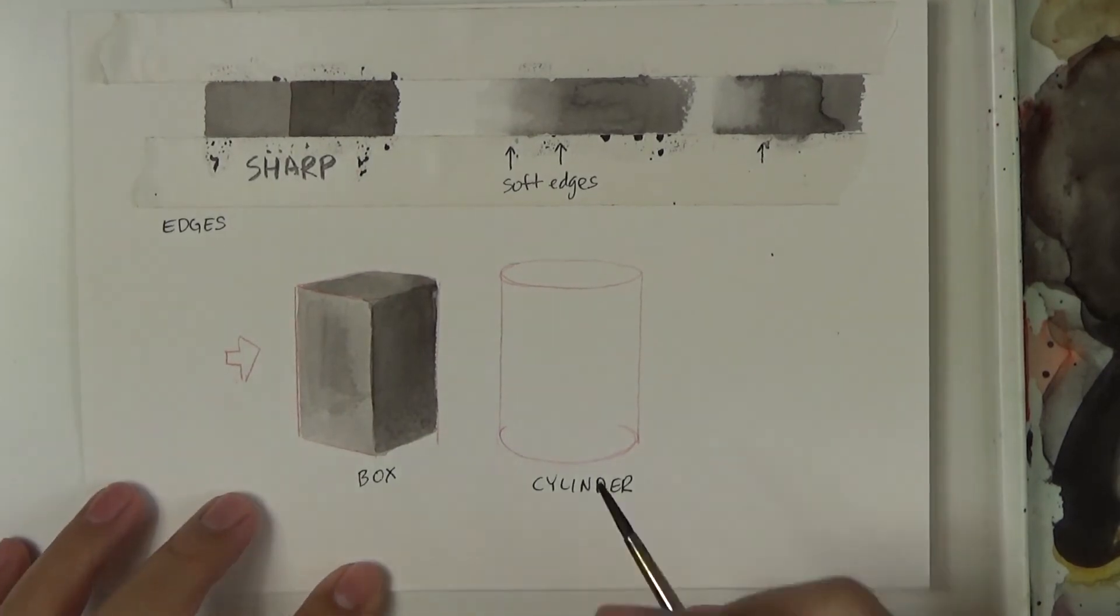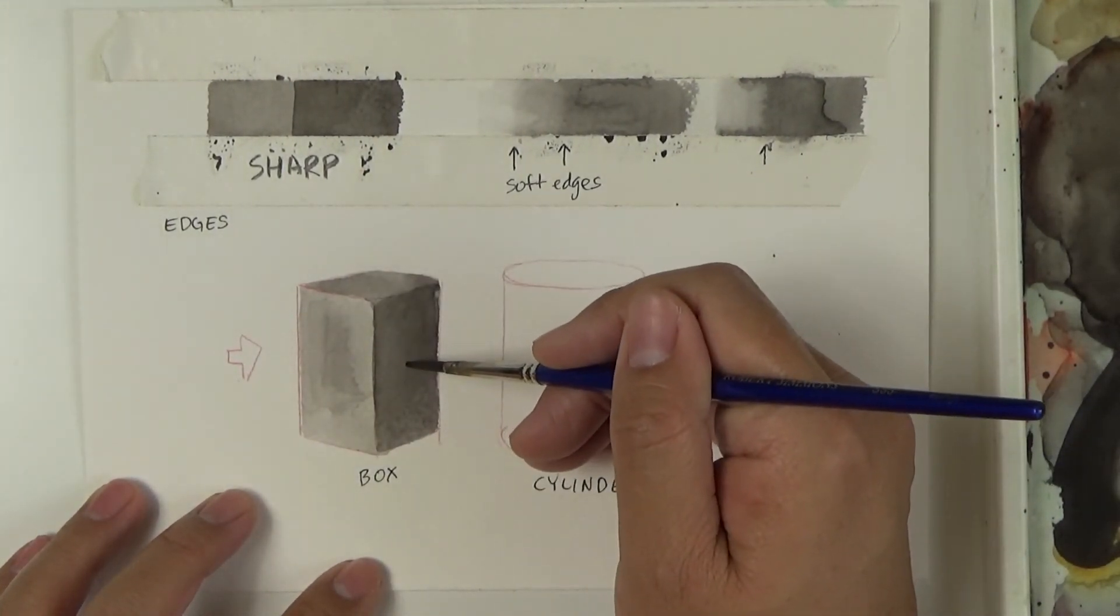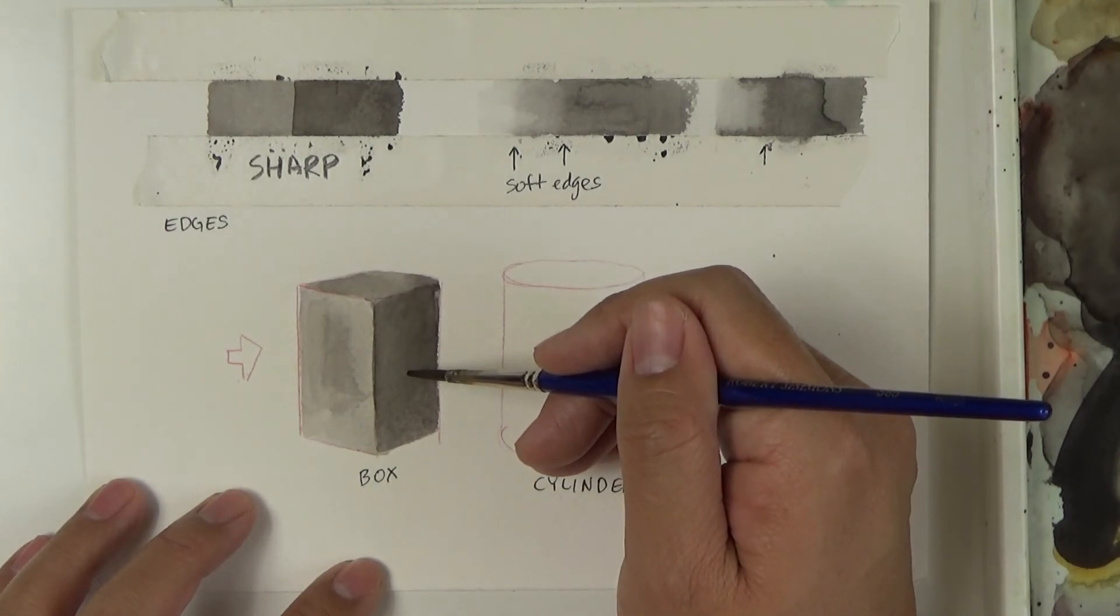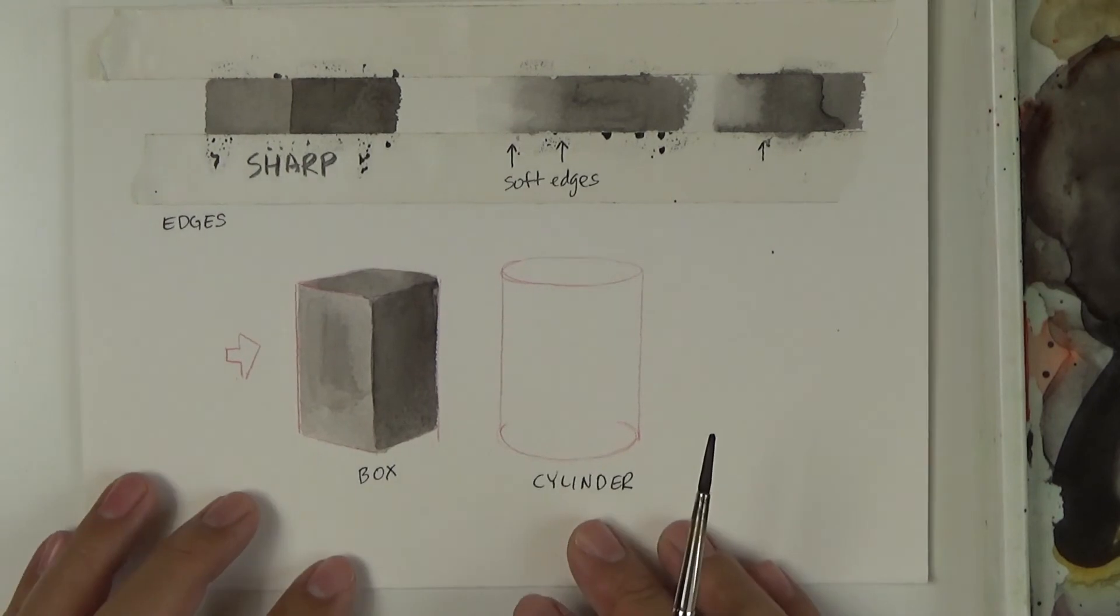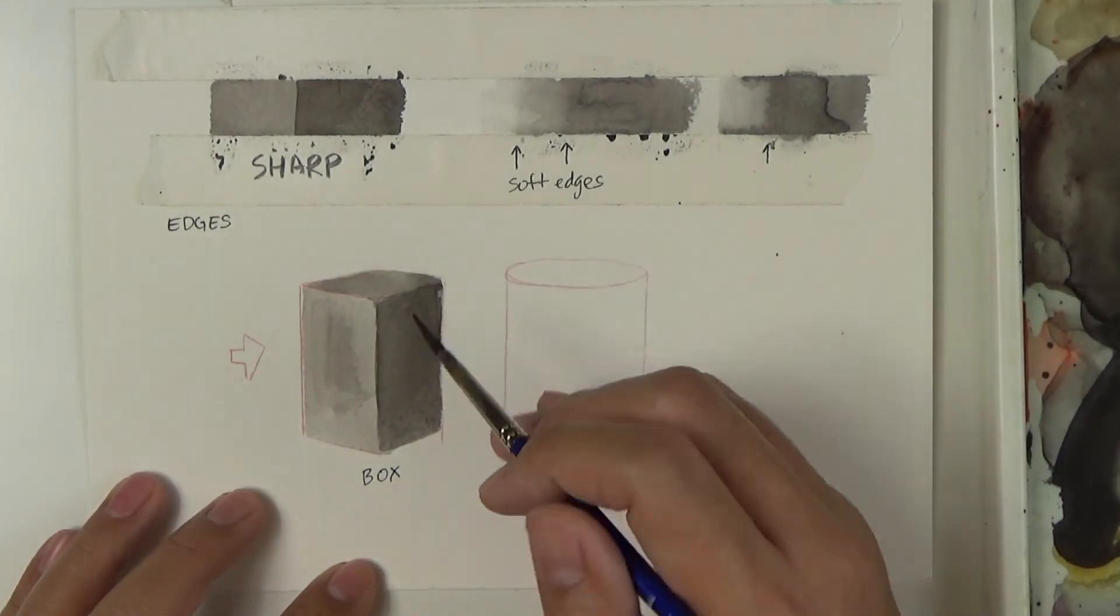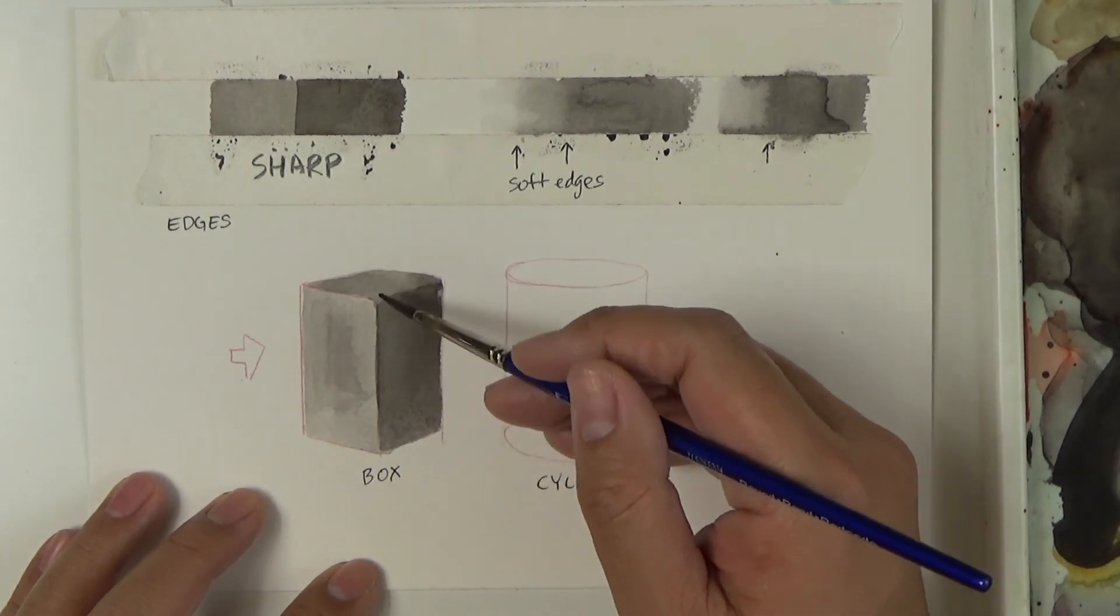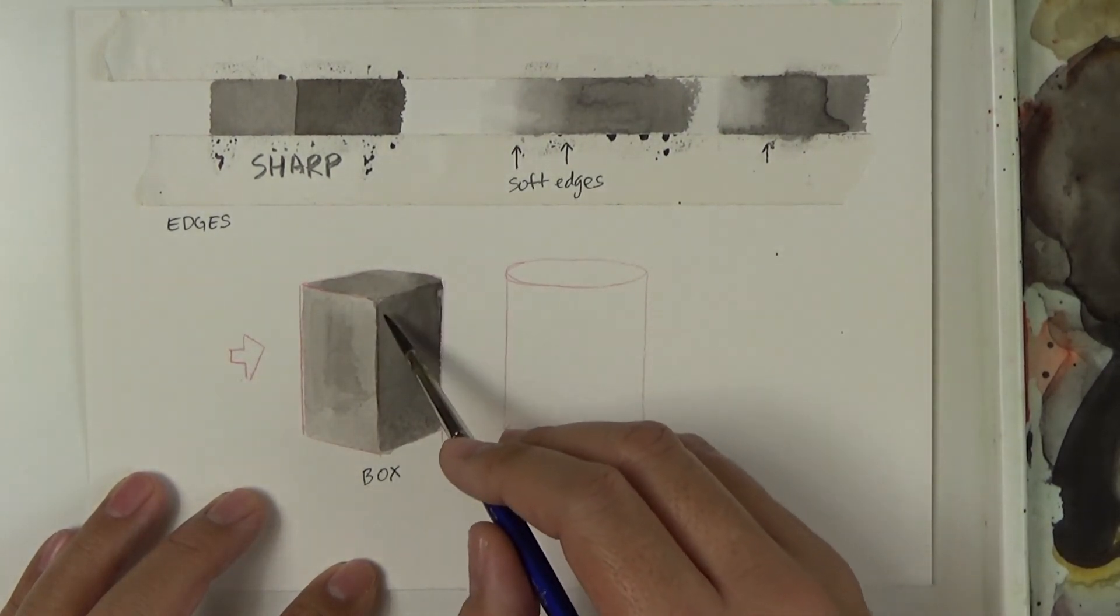Now depending on the strength of the light source, this side here can go darker still. And that really depends on the lighting condition. But for the most part this feels pretty good. We have three sides. Each side has a different value. And the edge is very sharp, which is consistent with shapes that are more boxy.